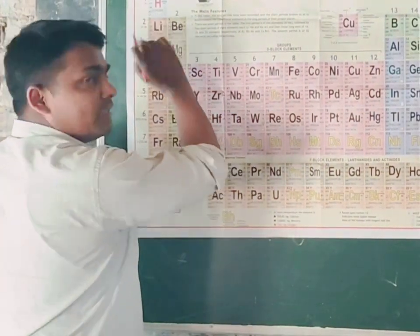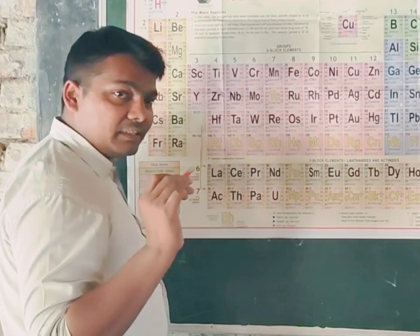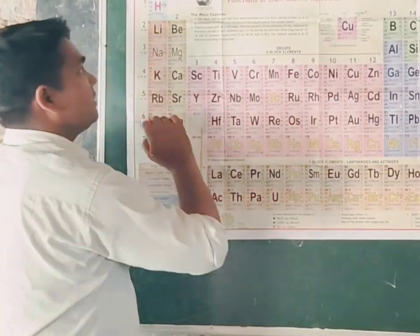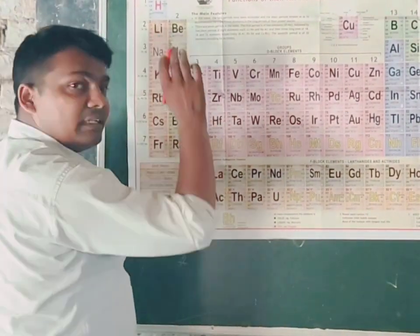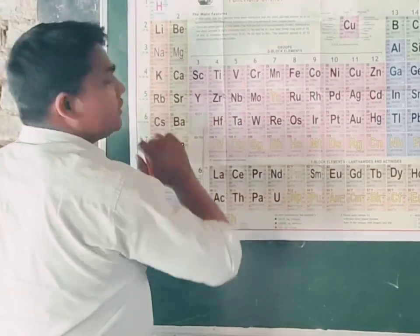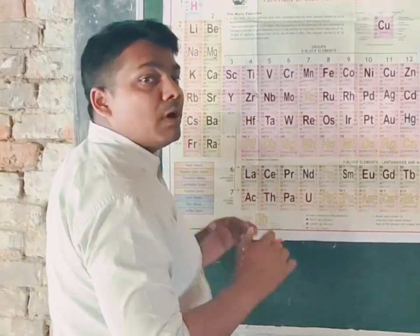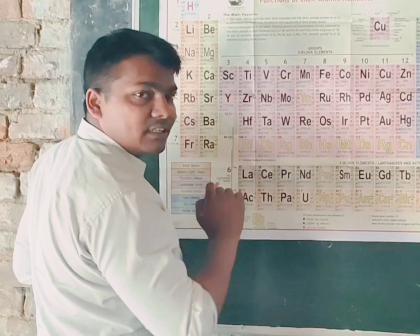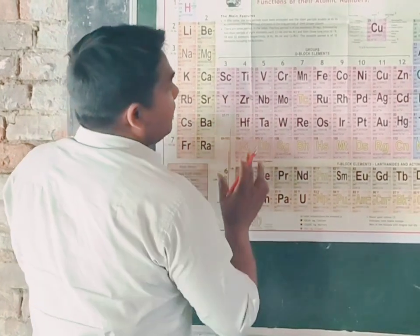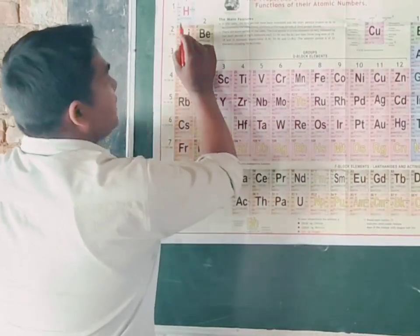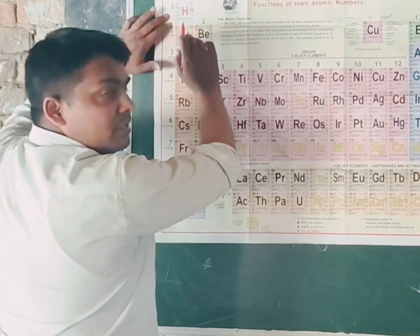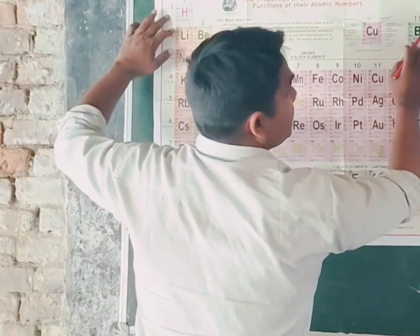Dear students, we are going to teach about the element hydrogen. What is hydrogen? It is the most important and basic first element in the total periodic table. Who was the founder of hydrogen? Who discovered hydrogen? Hydrogen is the first element by name in the periodic table.